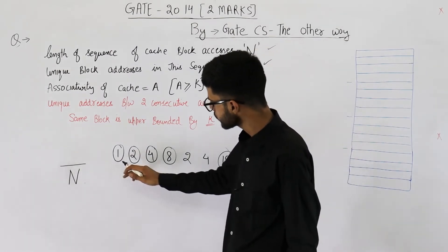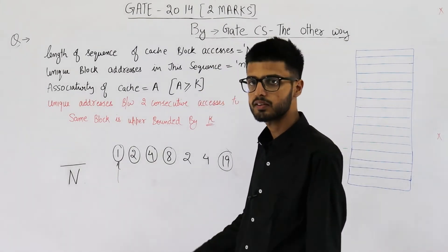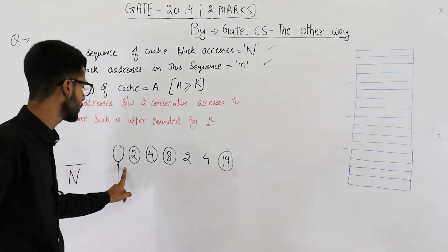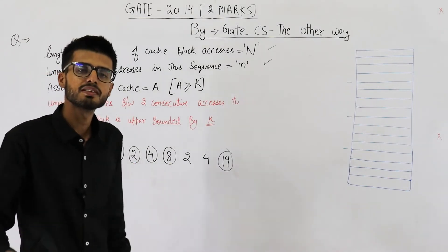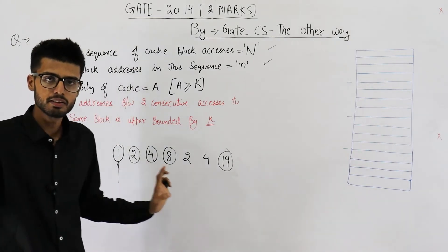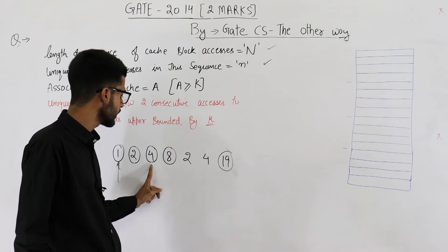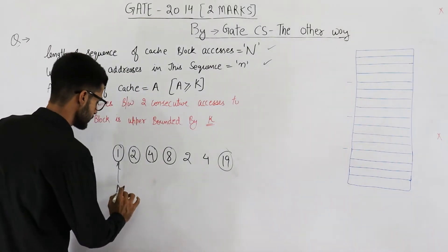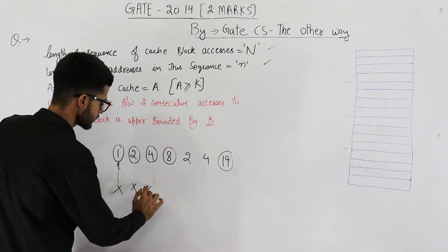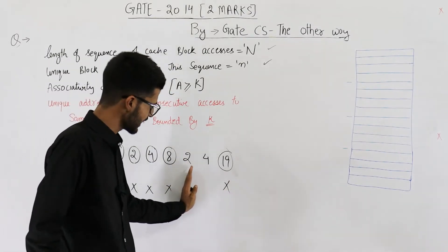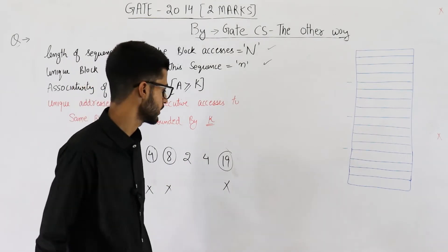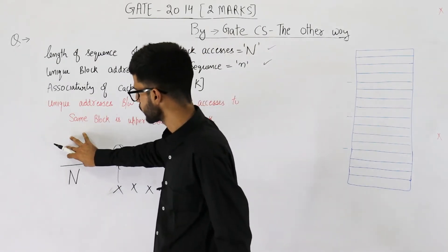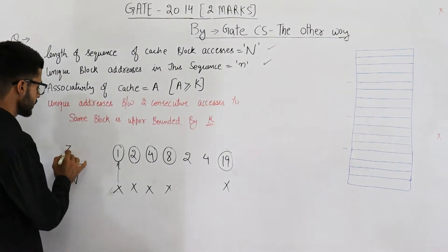Whenever some block is accessed for the first time, it has to be a miss. The first access will be a miss, this one a miss, this one a miss, this one a miss — because there is no chance you get any of these blocks in cache initially since the cache was empty. So the first access to each of the n unique blocks is definitely a miss. Any subsequent repeated access could be either a hit or a miss. That means at least n misses are certain.